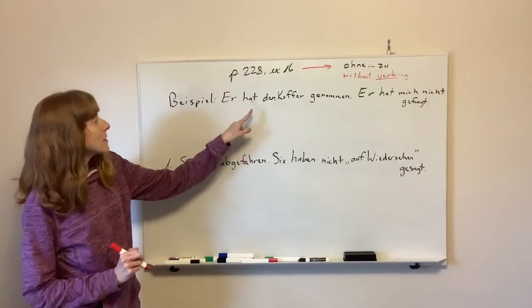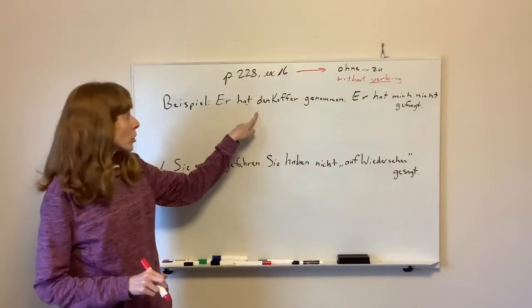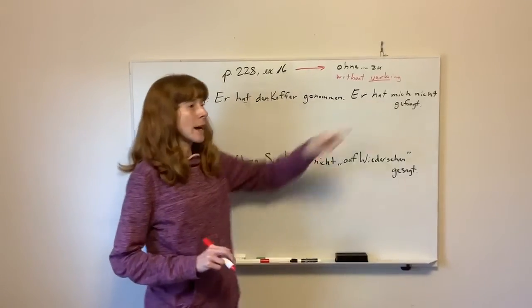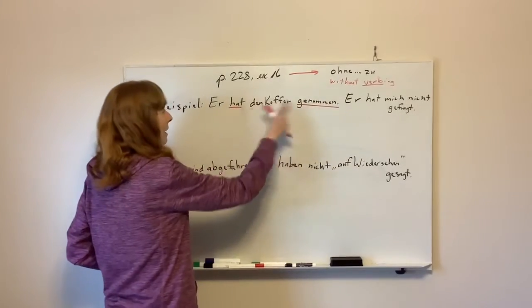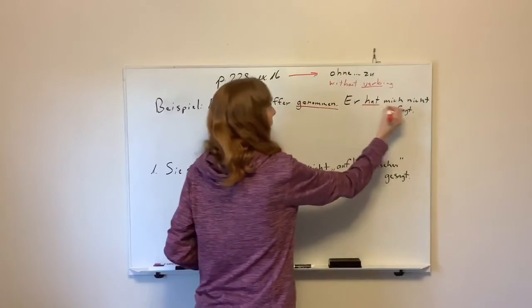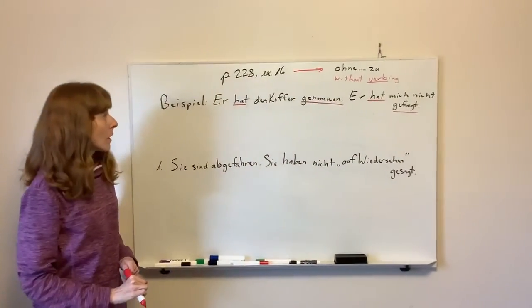Okay, so Beispiel. Er hat den Koffer genommen. Er hat mich nicht gefragt. He took the suitcase. He didn't ask me. So just a small review. We've got past tense up here. Has taken or took. Has asked or asked.